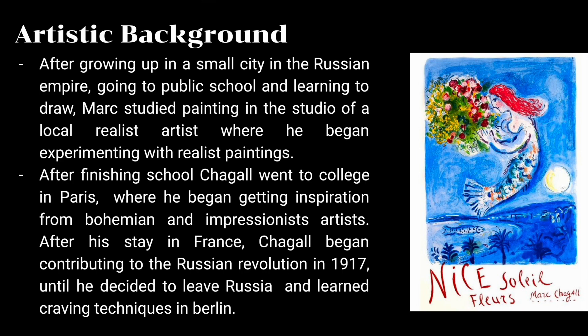Some more of his artistic background: after growing up in a small city in the Russian Empire, as previously mentioned, and going to public school and learning to draw, Mark started painting in the studio of a local artist, where he began experimenting with realist paintings. It is important to highlight that realism is a type of traditional painting very similar to actual objects and actual people, which is very important because later on Mark will become a modernist, taking part in a new wave of art that includes abstract space, objects, shapes, and colors, very different from realist paintings.